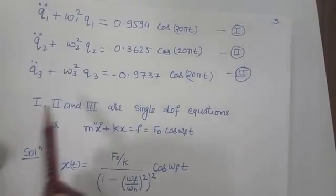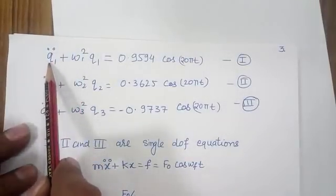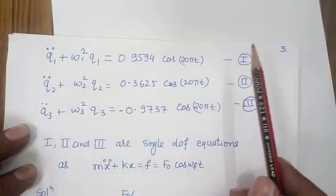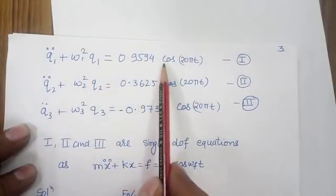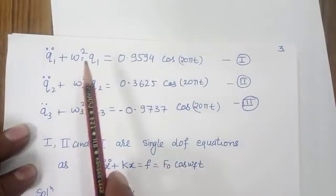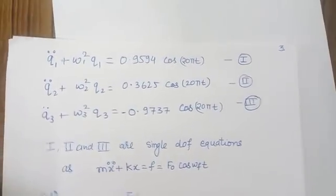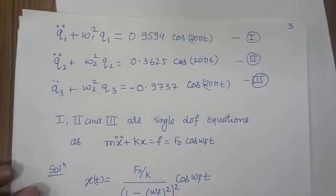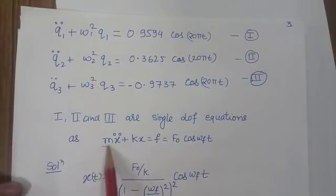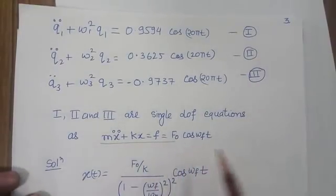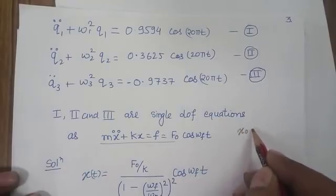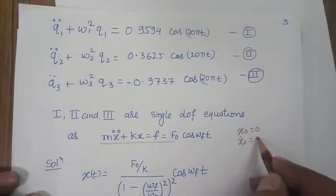This gives three independent equations for Q1, Q2, and Q3, each of which can be treated as a single degree of freedom forced vibration equation. These three equations can be solved using the same approach used for a single degree of freedom forced vibration problem, and if no initial conditions are specified the steady-state solution follows directly.